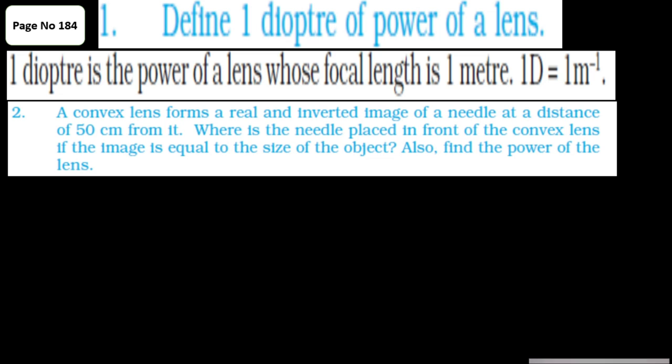A convex lens forms a real and inverted image of a needle at a distance of 50 cm from it. Where is the needle placed if the image is equal in size to the object? When the object is placed at 2F for a convex lens, the image is also obtained at 2F on the other side. So the needle is placed at 50 cm in front of the lens. Since the image is at 50 cm, the focal length is 25 cm, and the power of the lens is 1/(25/100) = 4 D.